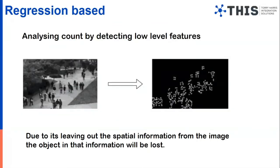The next method is regression-based, where you convert an image by detecting low-level features from it and summarize those features to get the appropriate result. What really happens when evaluating this model is that we remove the spatial information from the images. While removing that information to take only the core information from the input, some main information very near to those spatial features is also removed. Due to this information loss, our regression model does not give as much accuracy compared to the others.